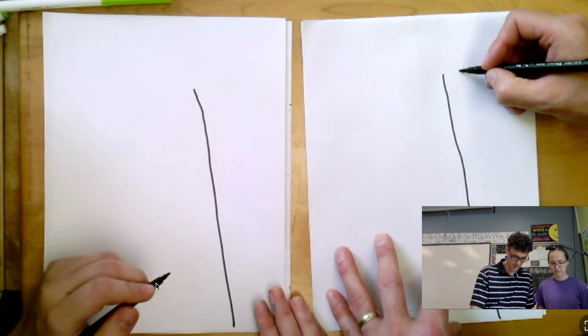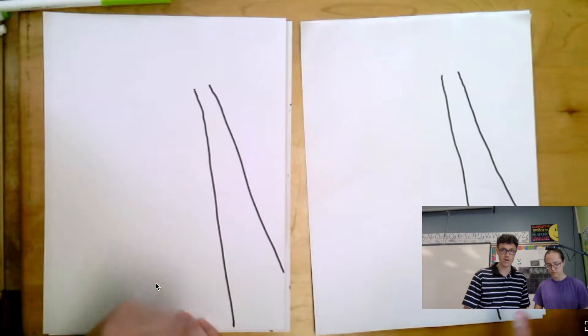All right, and then we'll have a second line and it's going to angle out a little bit more so that it's wider at the bottom than at the top.